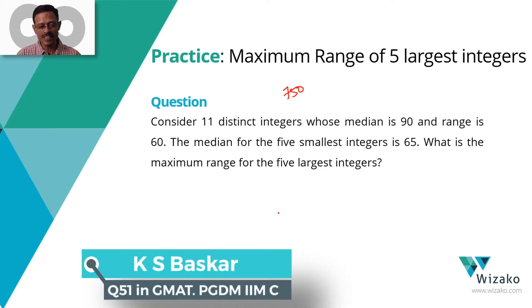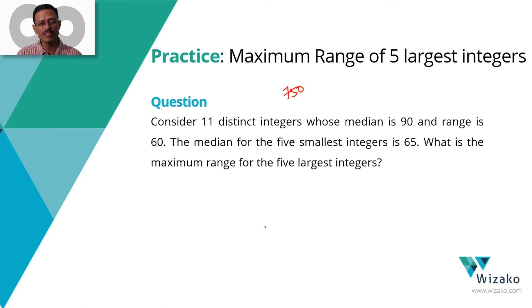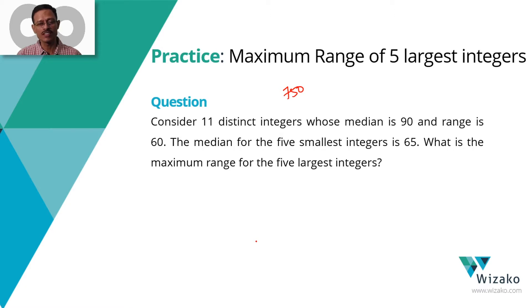Consider 11 distinct integers whose median is 90 and range is 60. Be switched on whenever you're reading data like this. It talks about these numbers being distinct integers, so no two numbers are going to be the same. Note, it doesn't say that these numbers are positive integers, so if the data permits, these numbers could also be 0 or could be negative. Keep these little things in mind as you're proceeding with the question.